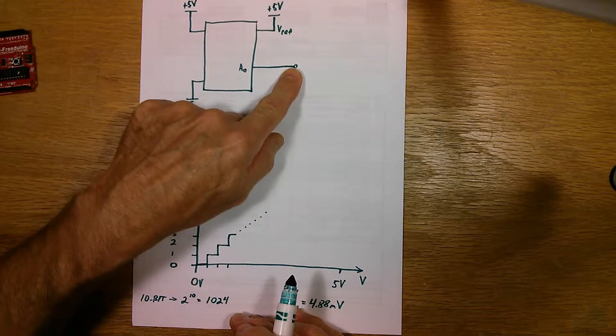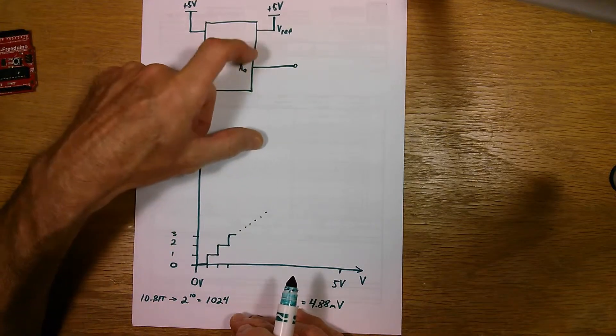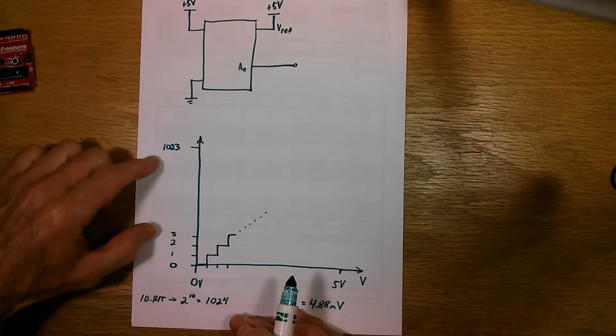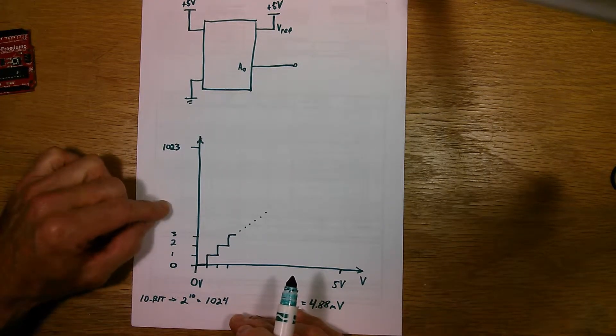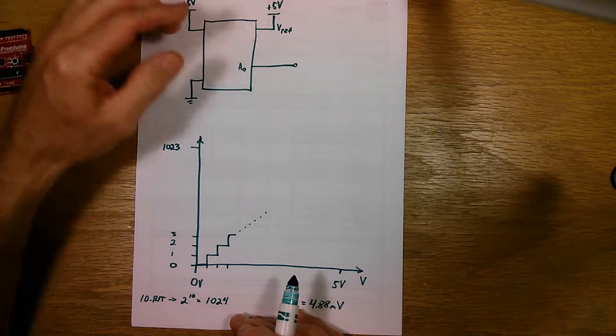So if the input voltage was two and a half volts and the reference was five volts, so the ratio is two and a half to five, which is one half, would be one half of the range, which would be about 512 or 511. And the same thing occurs for any other number there.